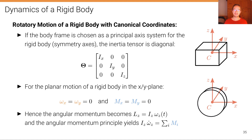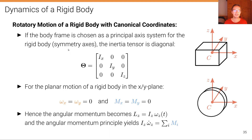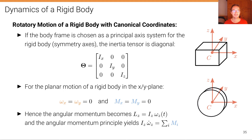In some cases things simplify. If we consider a canonical coordinate system where the body frame is chosen as the principal axis system — the symmetry axes — the inertia tensor is diagonal. Two examples are illustrated: a cuboid aligned with the body frame gives a diagonal inertia tensor, and similarly for a wheel-like rigid body.